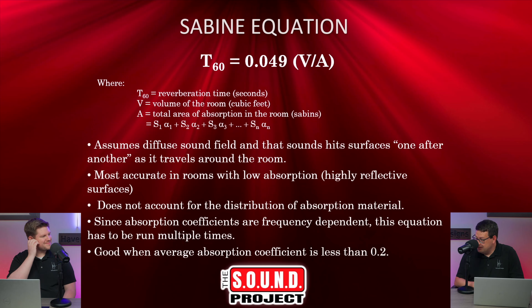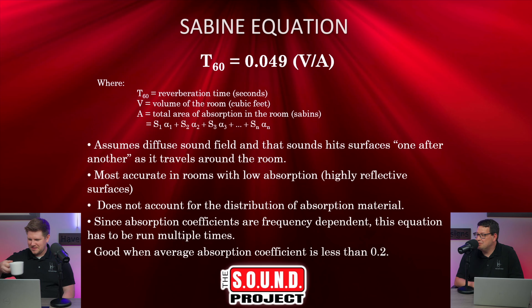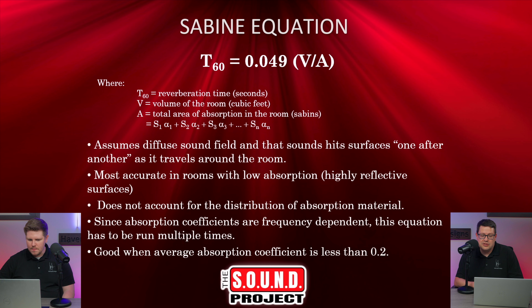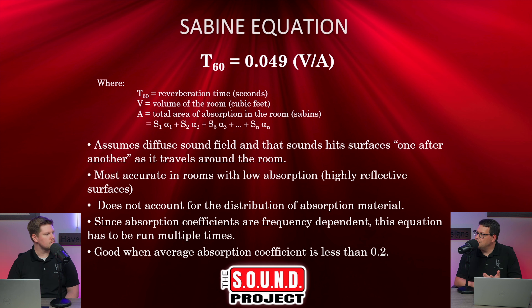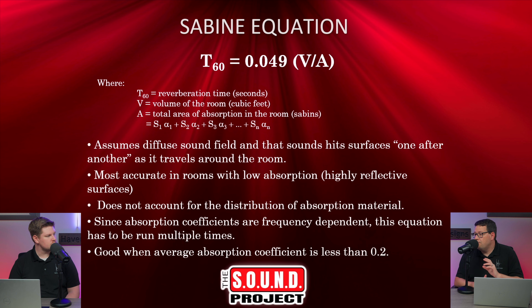I'm an engineer by degree and I like digging into these things, so I'll show a few equations here. The Sabine equation is the T60 — the reverb time, sometimes written as T60 or RT60 — which equals 0.049 multiplied by the volume divided by the total area of absorption in the room.